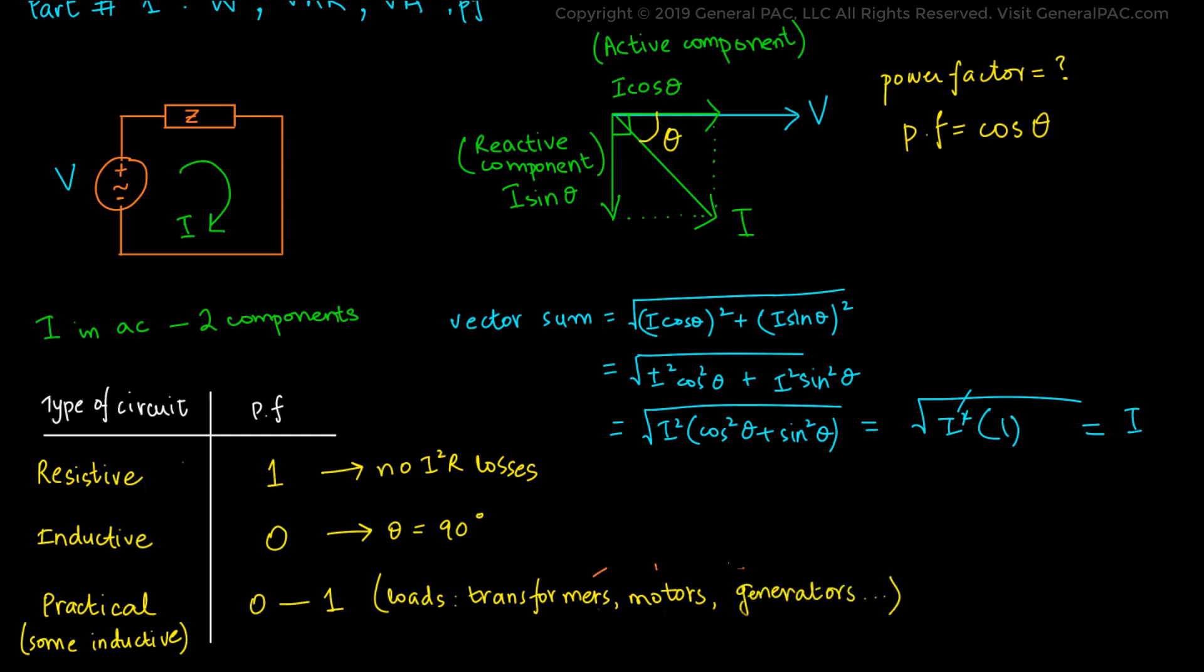And we want the losses incurred due to these loads to be as low as possible. Therefore, we always try to bring the power factor as close to 1 as possible. The power factor and efficiency are directly proportional to each other. Hence, the greater the power factor, the more the system efficiency.